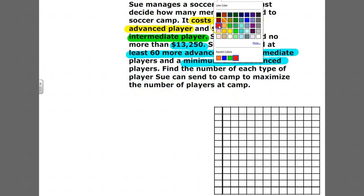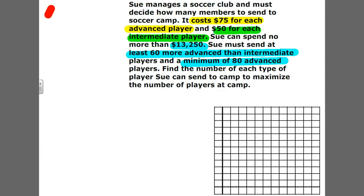Let's talk about the money and the variables first. We're going to need two variables. X could be the number of advanced players and Y would be the number of intermediate players.